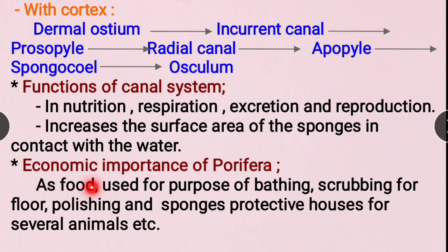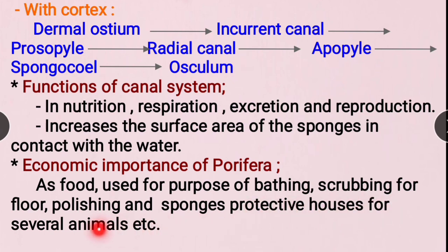Economically, sponges are used for bathing, scrubbing, and floor polishing. They also serve as protective houses for small animals like fishes and worms, helping them escape predators.